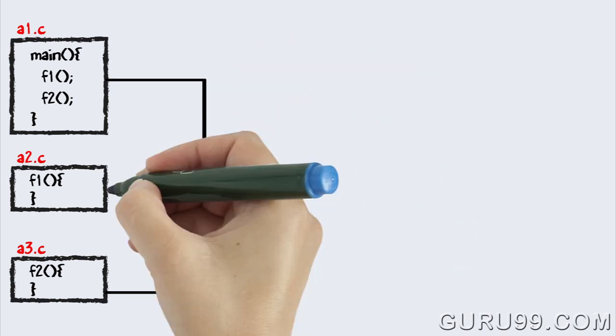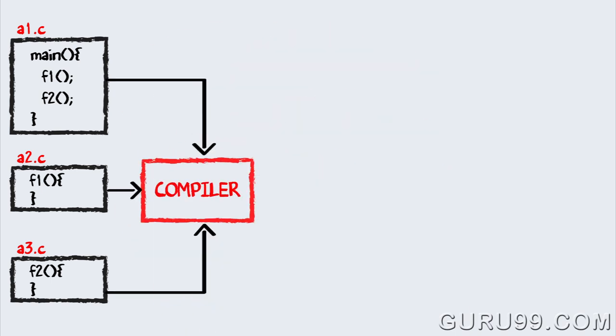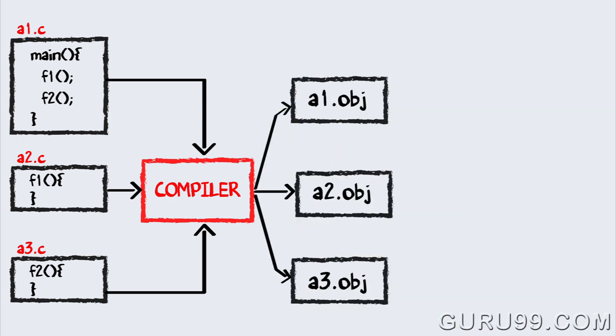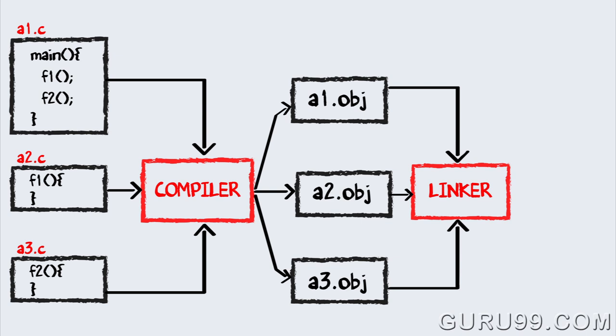All these files are fed to the compiler, whose output is the corresponding object files, which is the machine code. The linker will club these three files together and produce an .exe file.